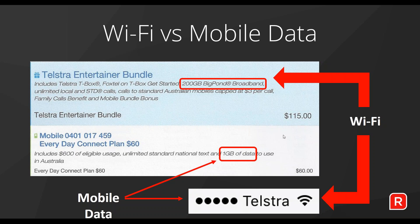The second part of my Telstra bill — the white section — is what I'm paying for my mobile data and my mobile phone plan. With the mobile phone plan I'm only getting one gigabyte of data per month and I'm paying 60-odd dollars for the privilege. That also includes some telephone calls and text messages. Compared to what I'm getting for my Wi-Fi data at home — 200 gigabytes for $115 including local and STD calls — you can see the difference in value.